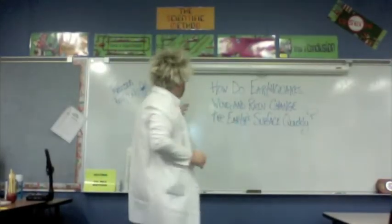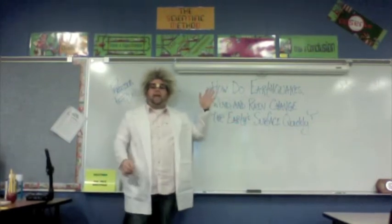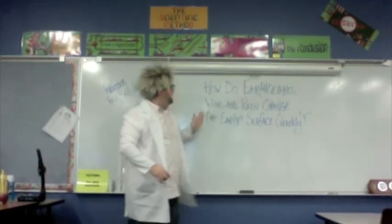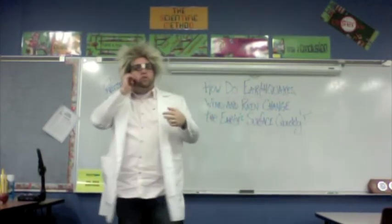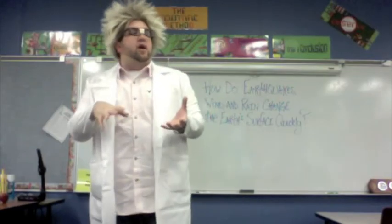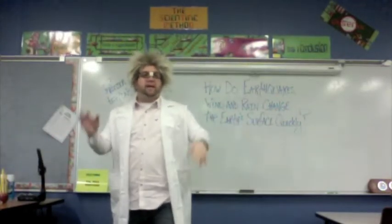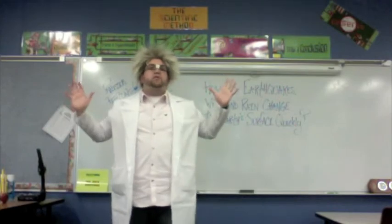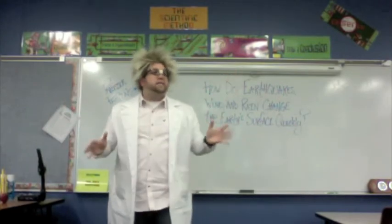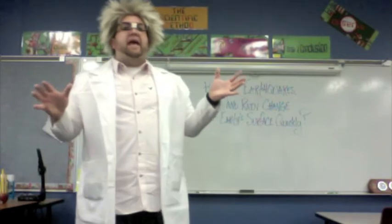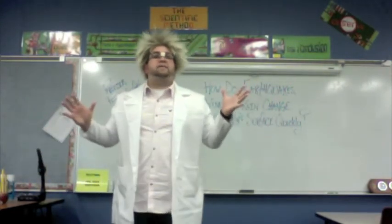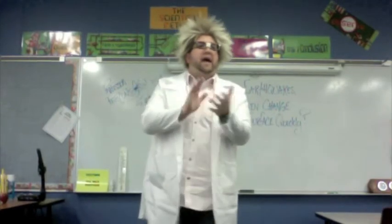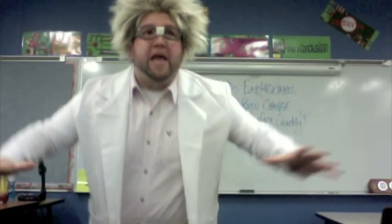Here's the question we're going to answer in our lab: How do earthquakes, wind, and rain change the Earth's surface quickly? In your group, we're going to make a little container of sand. We'll simulate an earthquake to see how much sand comes out, make a big thunderstorm with lots of wind, and finally make a hurricane with a big tidal wave to see how it changes the earth quickly. When we come back on YouTube, we are going to do our experiment!